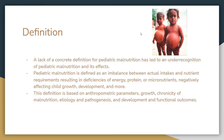In the top right picture you can see an example of kwashiorkor, which is a disease that causes extreme enlargement of the stomach due to protein deficiency in children. The definition that ASPEN — the American Society for Parenteral and Enteral Nutrition — came up with is based on anthropometric parameters, which are body measurements, growth, chronicity of malnutrition, etiology which is a fancy word for causes, pathogenesis which is the growth of diseases, and development and functional outcomes.